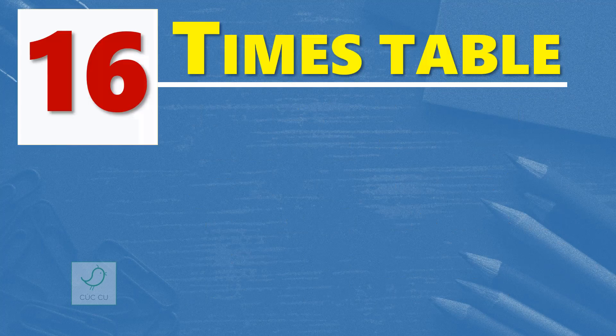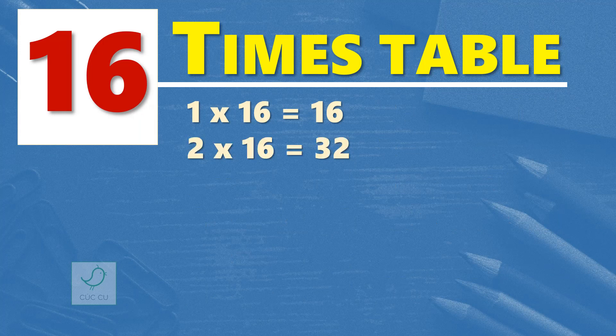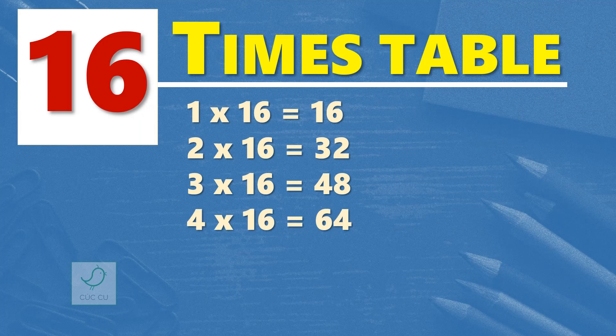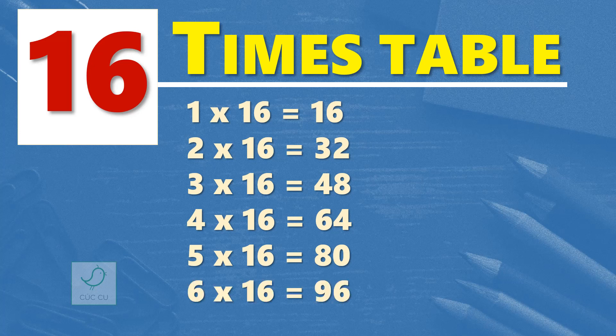16 times table. 1 times 16 is 16. 2 times 16 are 32. 3 times 16 are 48. 4 times 16 are 64. 5 times 16 are 80. 6 times 16 are 96. 7 times 16 are 112.